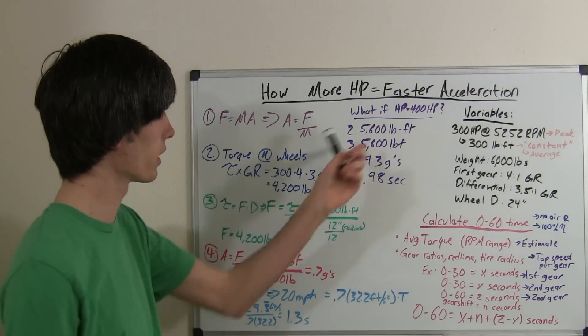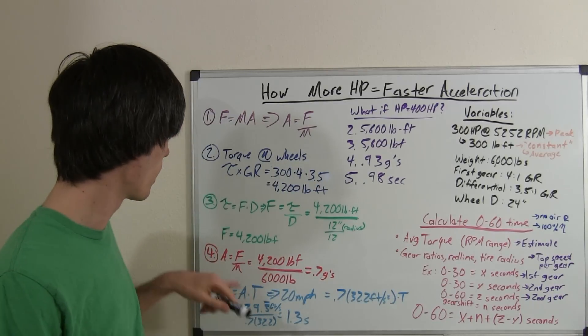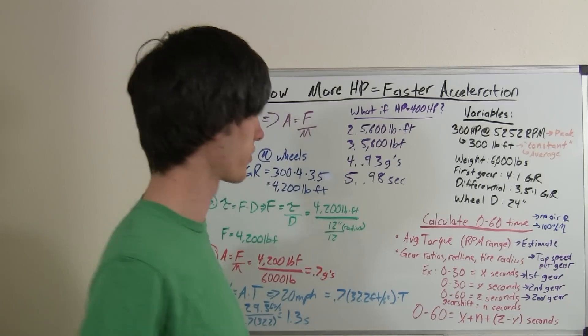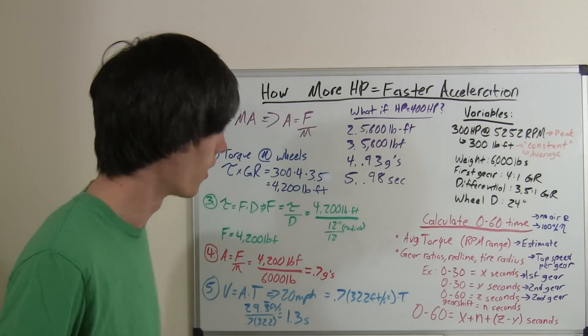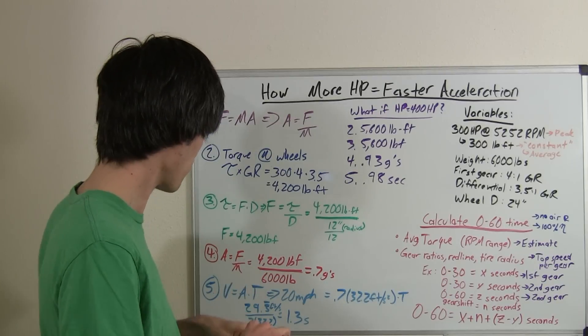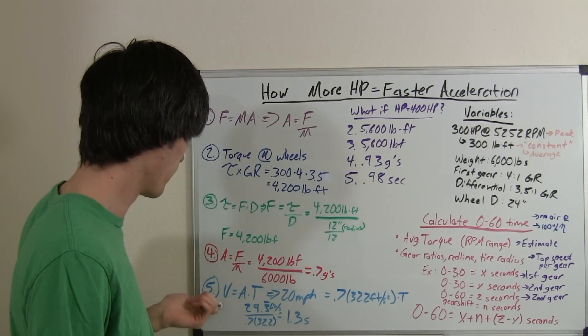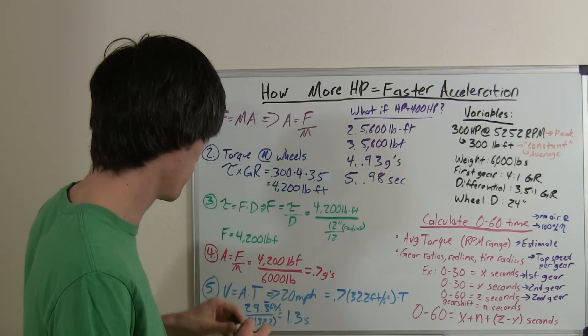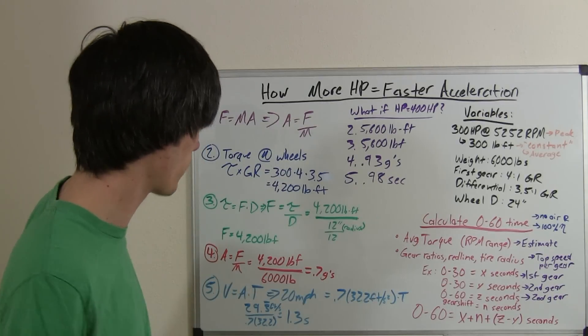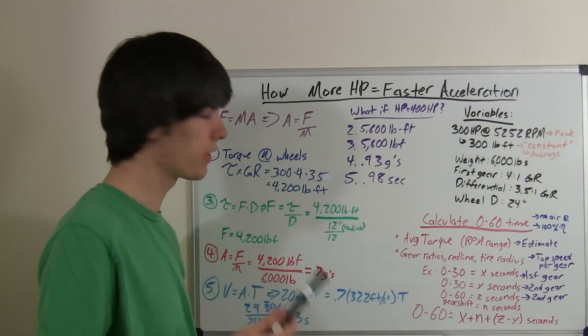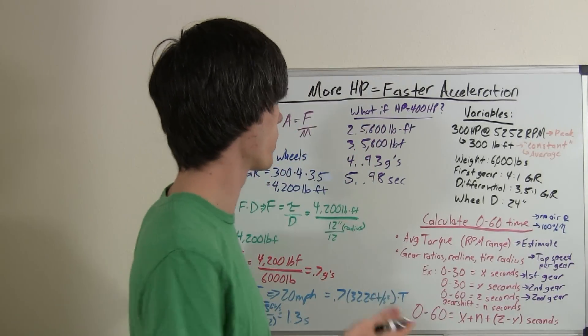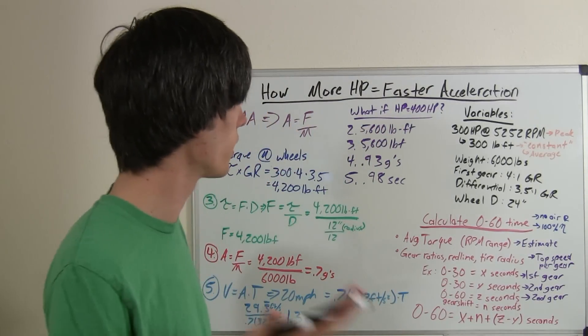So, step three, we're going to have 5,600 pound-force. Step four, it's going to give us 0.93 G's, which is very good acceleration. Now, there's not many cars that are going to get anywhere near to doing that, but, you know, the nice cars out there can do it. And, then, step five is we'll find the time that it takes to get to 20 miles an hour, so 0.98 seconds. So, about 3 tenths of a second difference to 20 miles an hour, which is actually a pretty big difference, with a 100 horsepower increase.